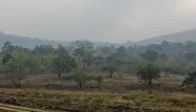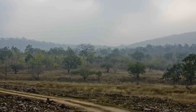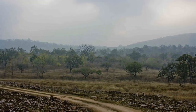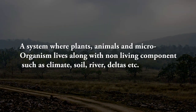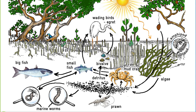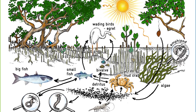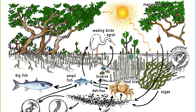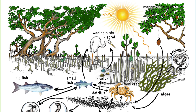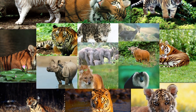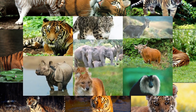The ecosystem is a system where plants, animals, and microorganisms live along with non-living components such as climate, soil, and river deltas. When a plant or an animal is endangered, it affects the food chain and indirectly the entire ecosystem. We can find out about these endangered species from the Red Data Book.